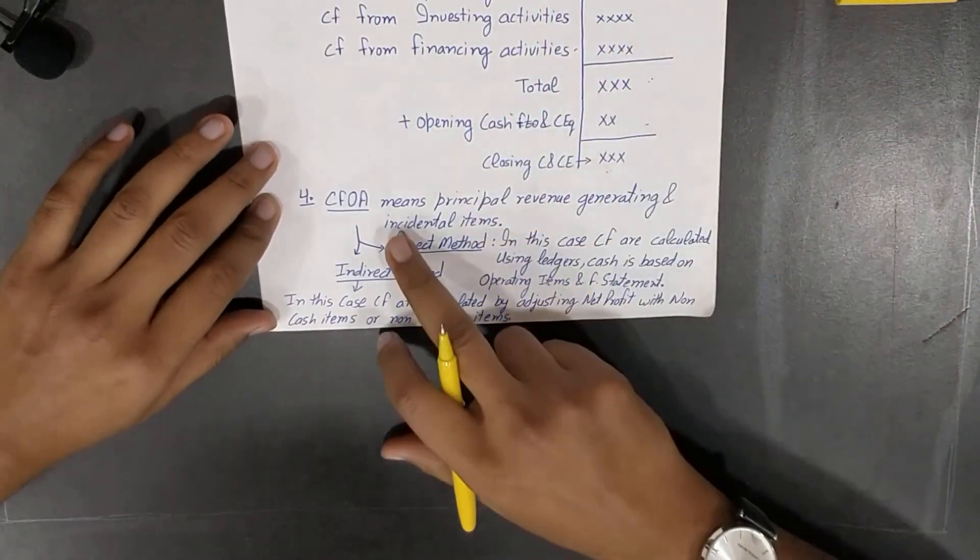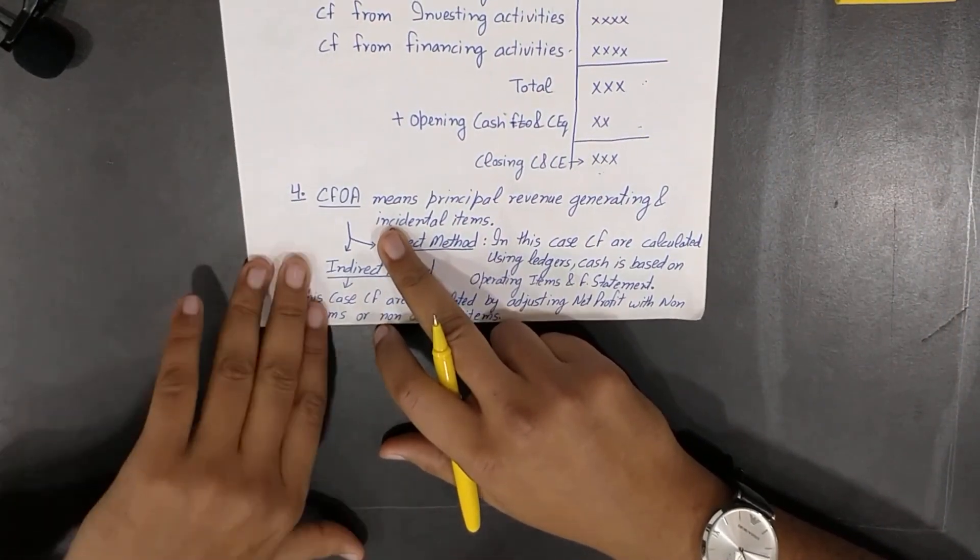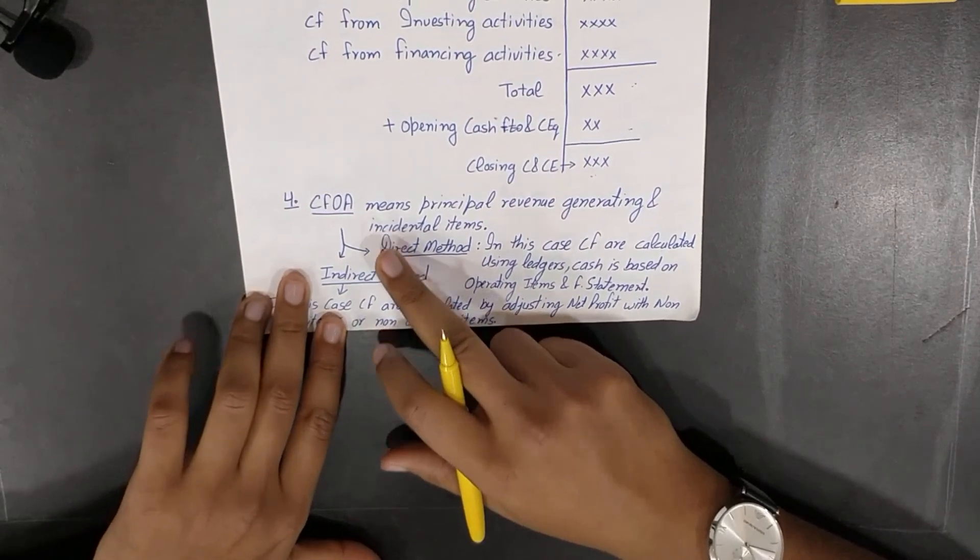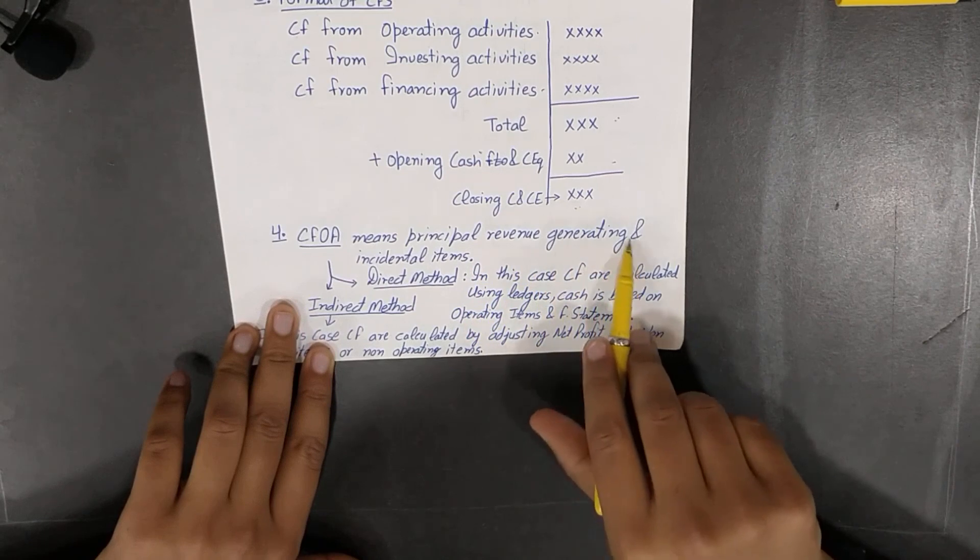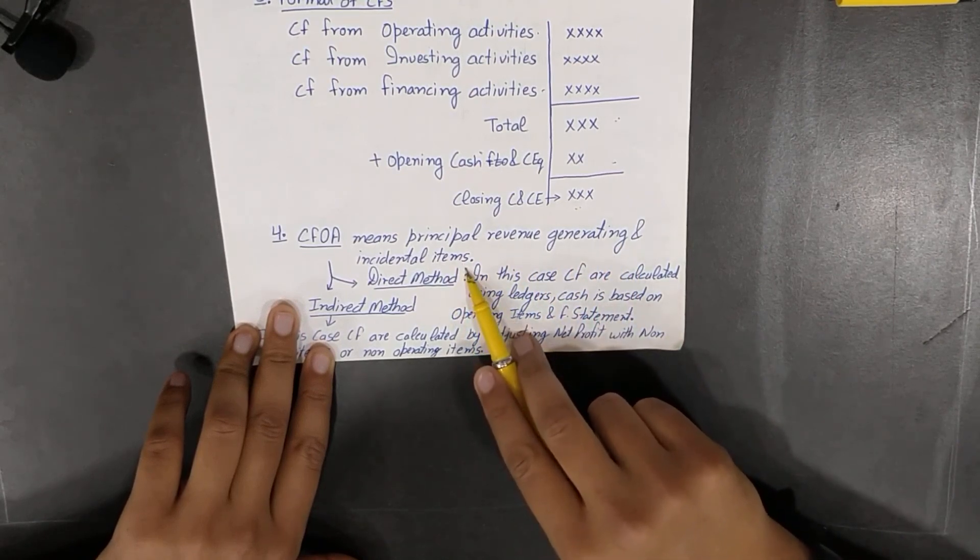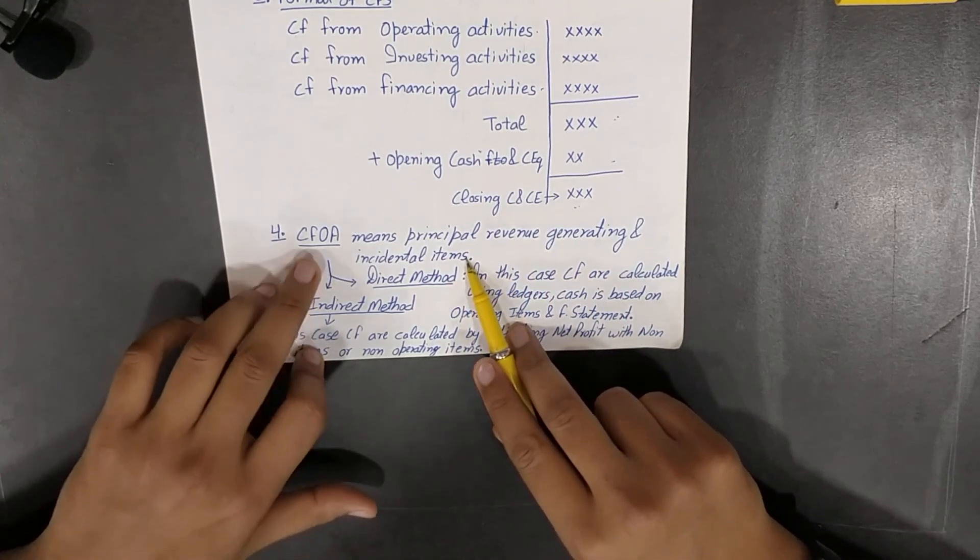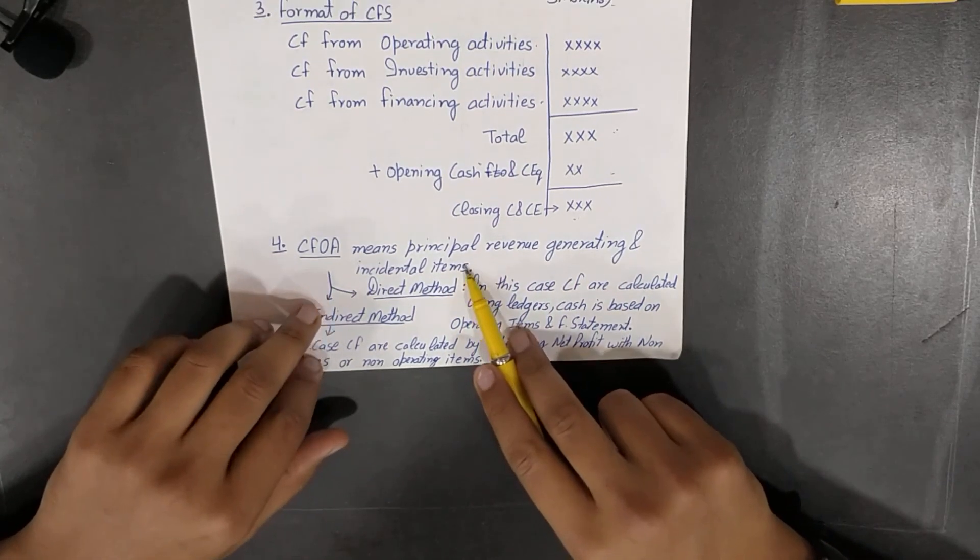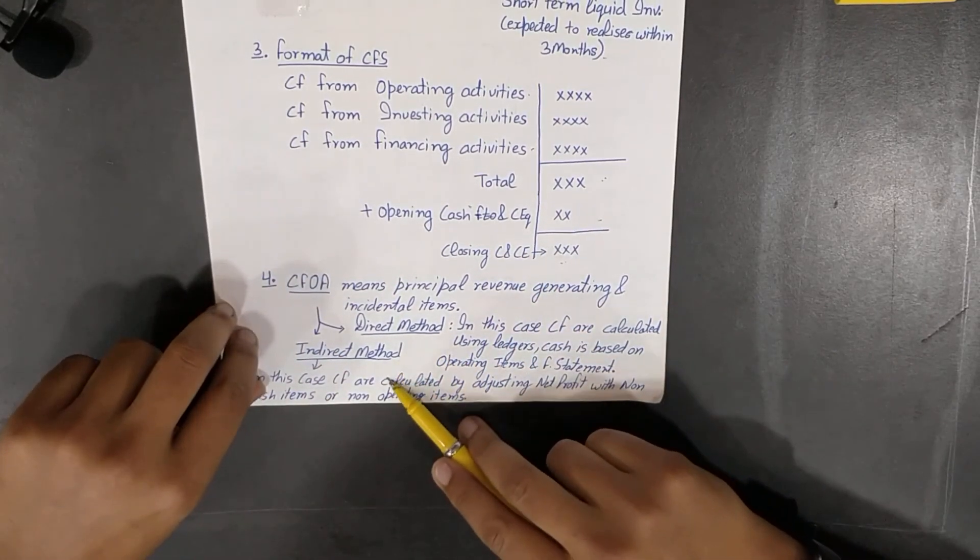Now, next we will discuss all these operating, investing, and financing activities. Now what is meaning of cash flow from operating? Operating activities cash flow from operating activity means revenue generating and incidental items, principal revenue generating and incidental items.